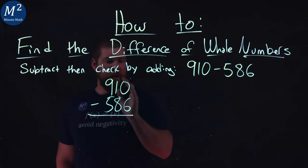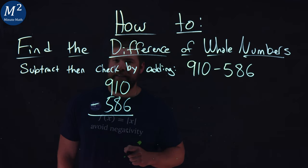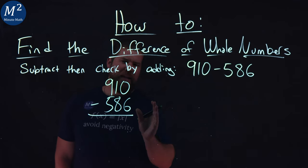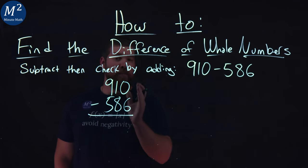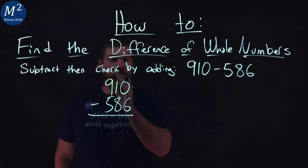Start with the first ones digits here, 0 minus 6. That becomes difficult right off the bat. I need to grab some information from the next place value over, from the 10.